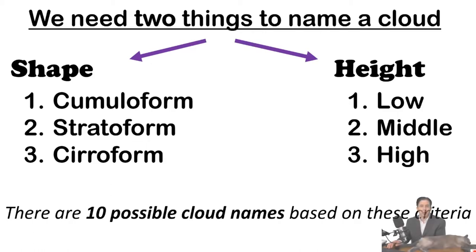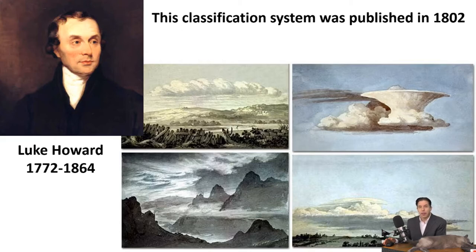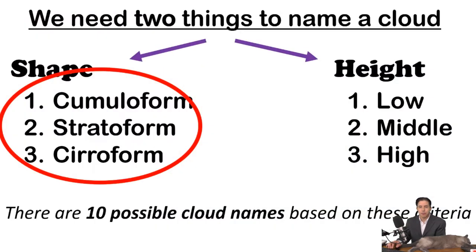The system we're talking about was first published in 1802 by Luke Howard. He was a pharmacist who lived in England, and he decided that the world needed a cloud classification system, so he made one up. It's not great, but it is still in use today. Here are some pictures of paintings that he made back in the 1800s.